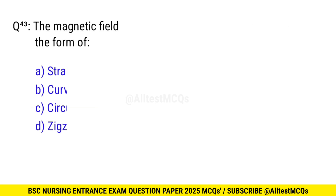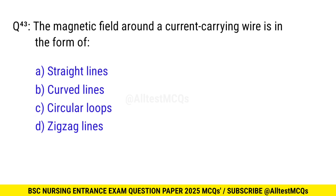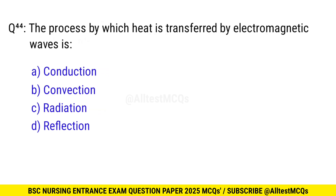Question No. 43: The magnetic field around a current-carrying wire is in the form of? The right option is C: Circular loops. Question No. 44: The process by which heat is transferred by electromagnetic waves is? The right option is C: Radiation.